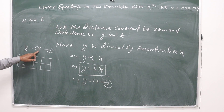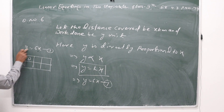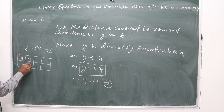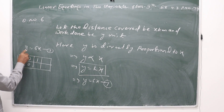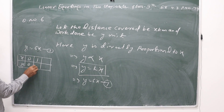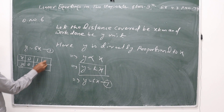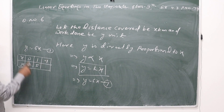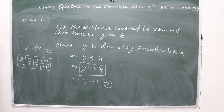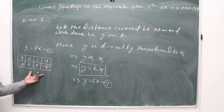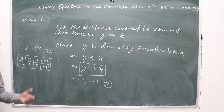If we put x = 0 then y = 0. If we put x = 1 then y = 5. If we put x = -1 then y = -5. These are the three solution sets.